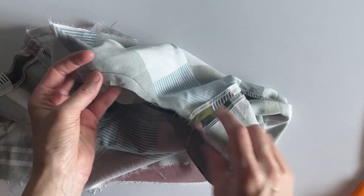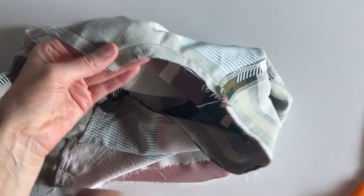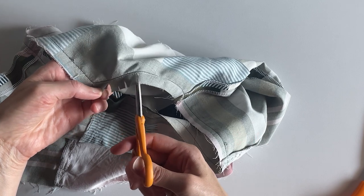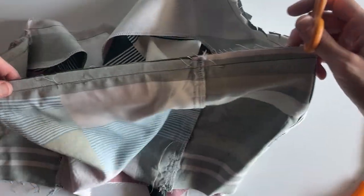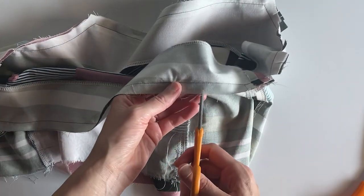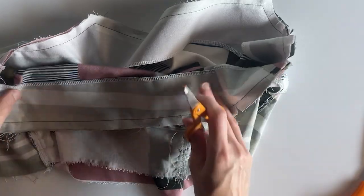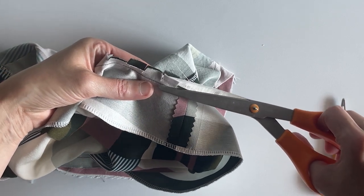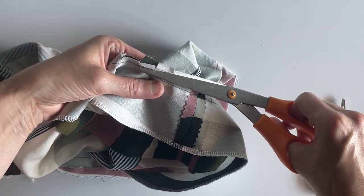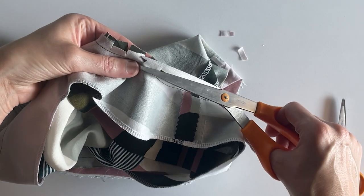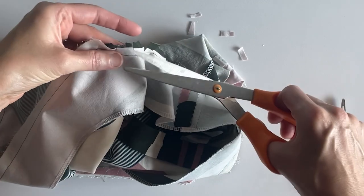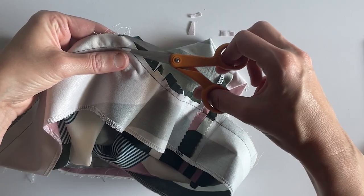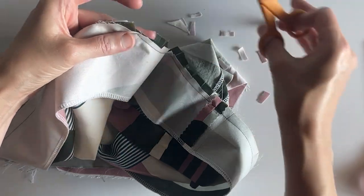Now we need to grade the seam allowance and clip this curve. I like to use my little thread snips and just clip about every half inch. These straight edges aren't really necessary—you can do it in a few places if you want, but I've been okay not doing it. Then I like to use a bigger pair of scissors and cut back the facing seam allowance about halfway. This will just create a gradation in the seam allowance, and that will help prevent it from looking lumpy. Then I also trim down at the corner.